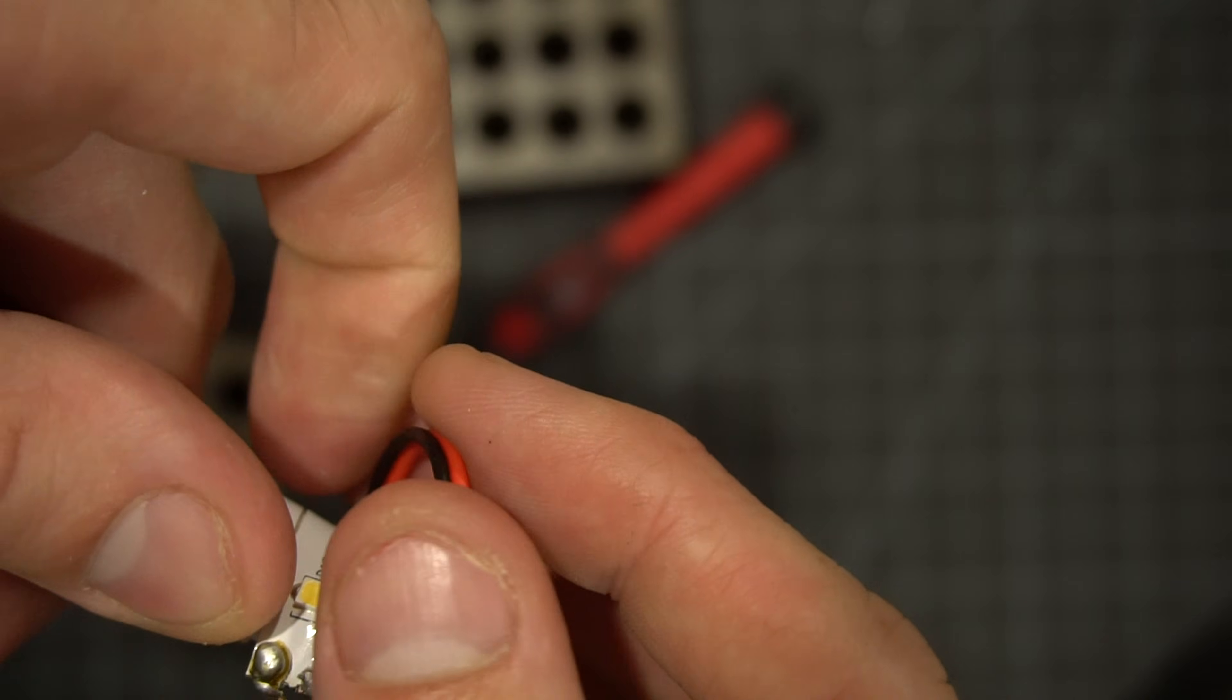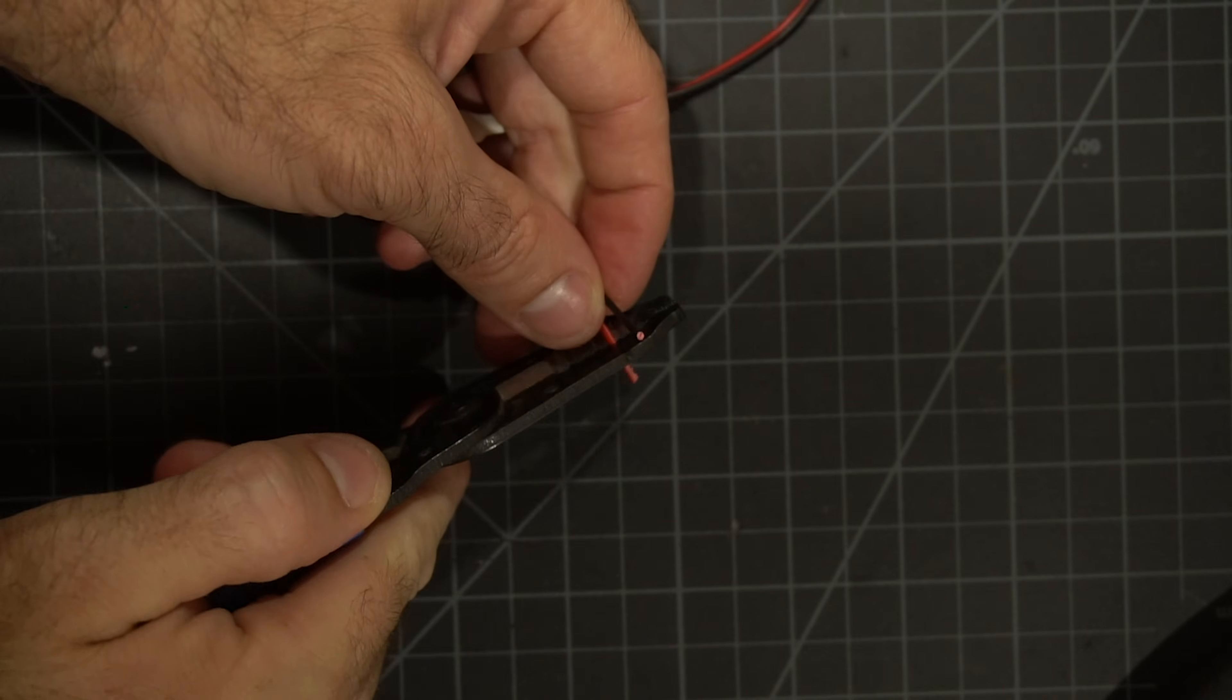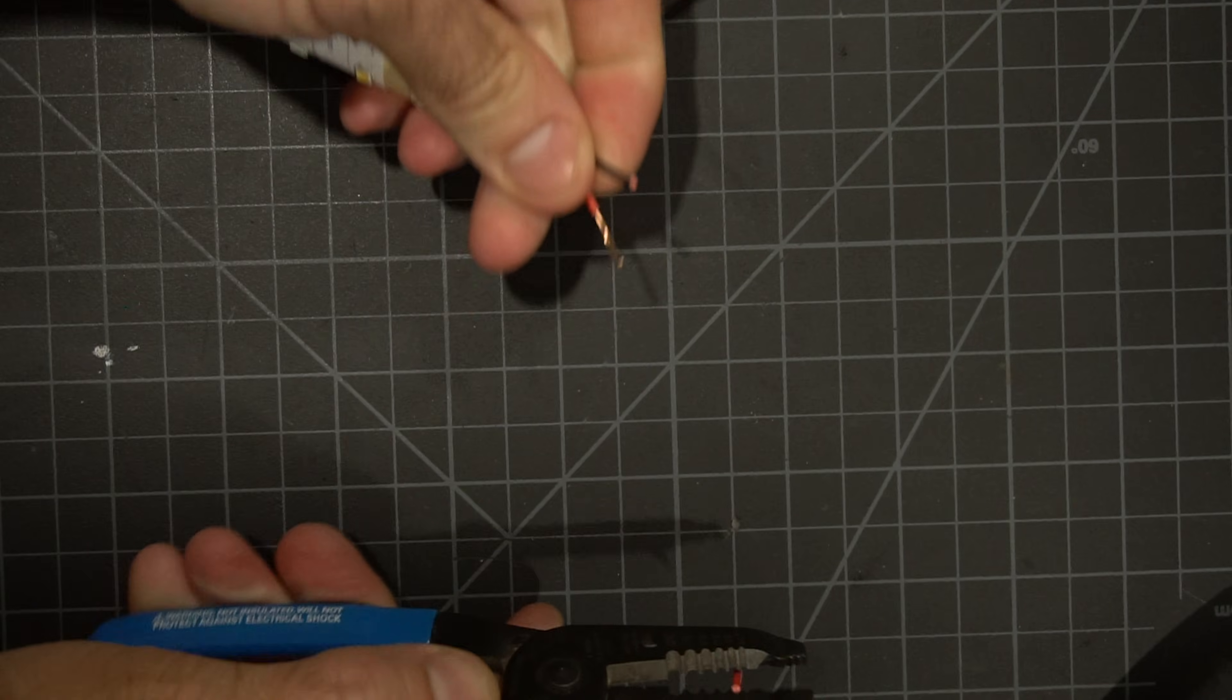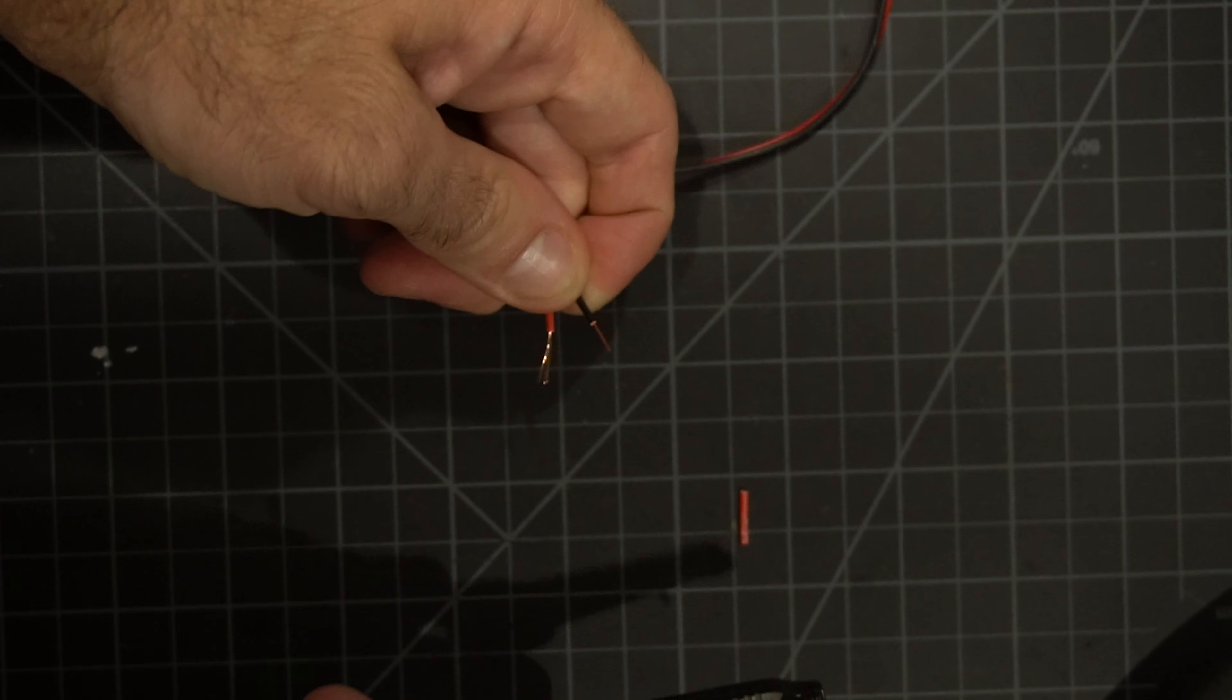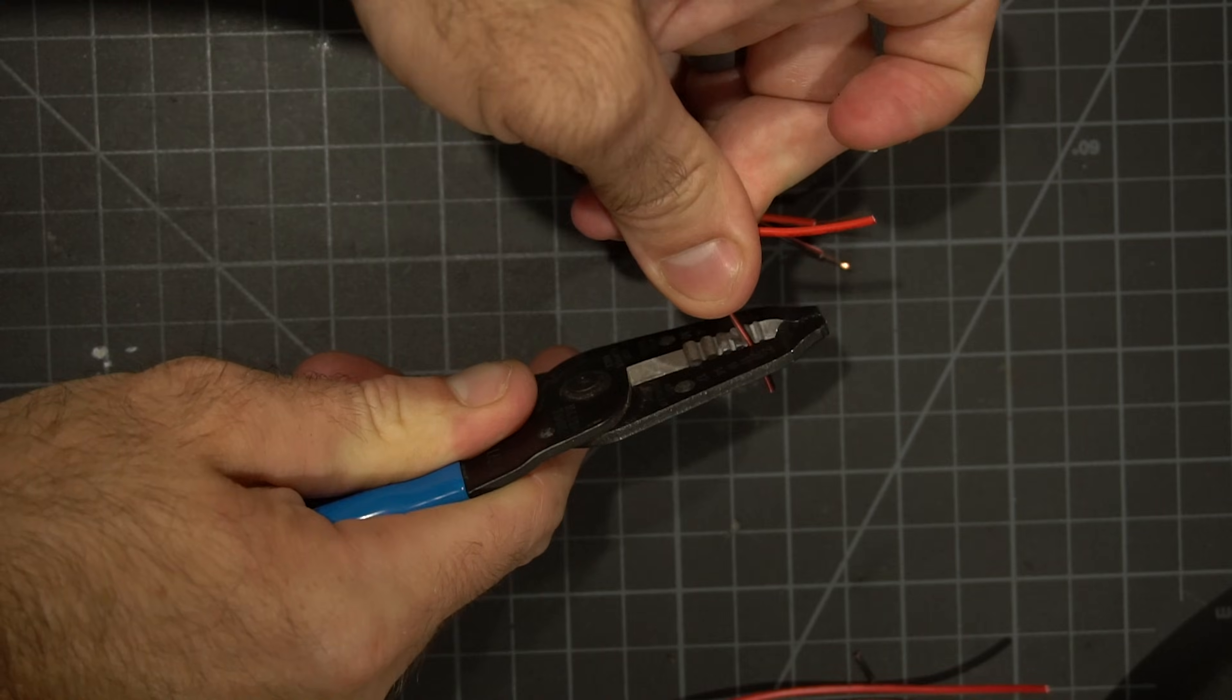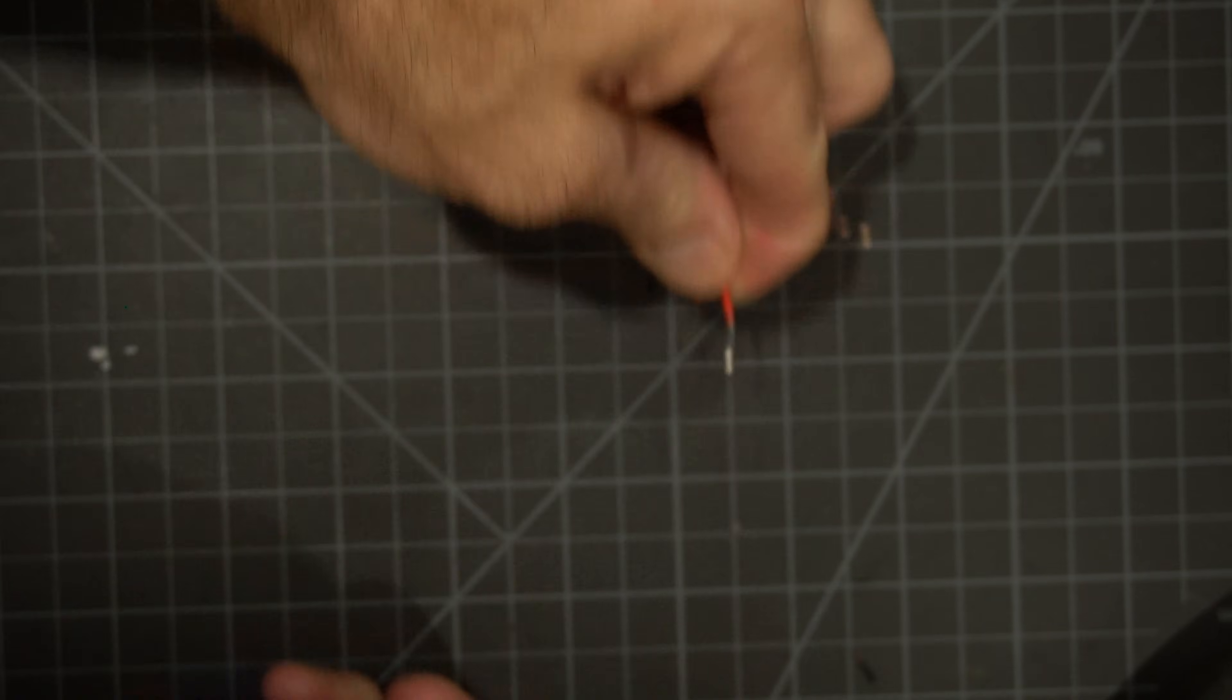After those are soldered, let's go back to the other end. Strip the excess wire here too, and then if you need to, cut and strip the wires coming from your LED strip. You want just under two inches of wire for each of these.